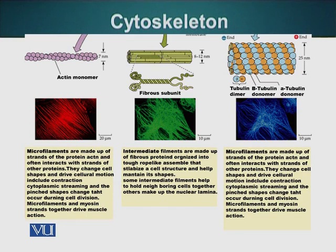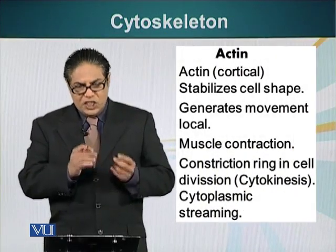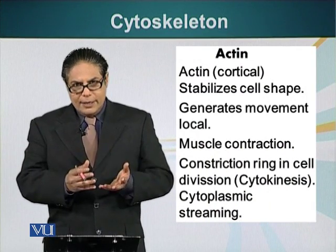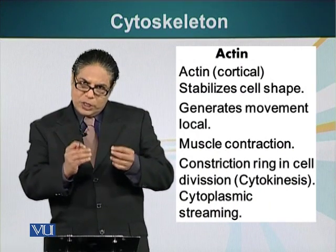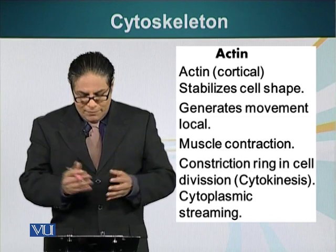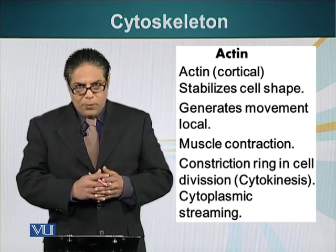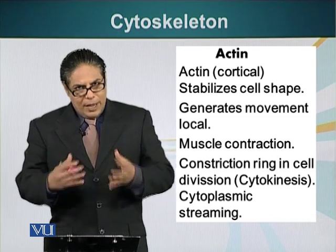Let's look at them one by one. We will first look at actin filaments. As we also saw in the animation previously, actin exists in two forms: G-actin (globular actin) and F-actin. Globular actin polymerizes — smaller units of actin attach to each other and form helical structures which are the actin filaments.